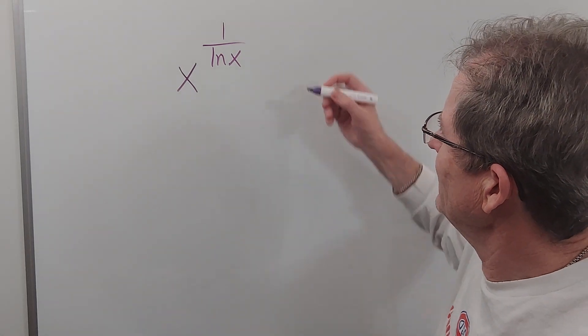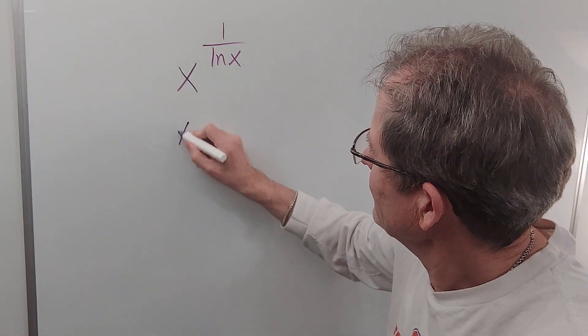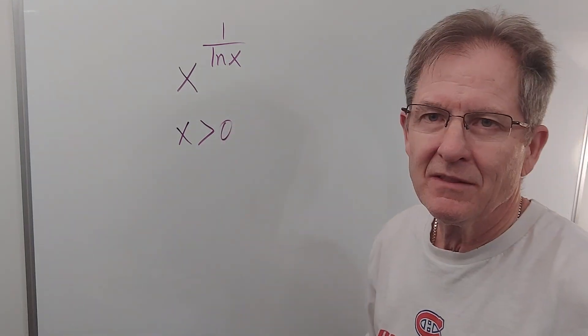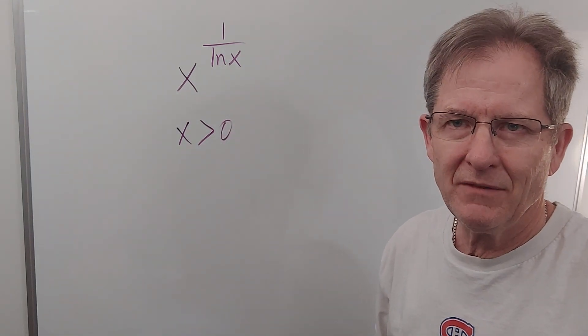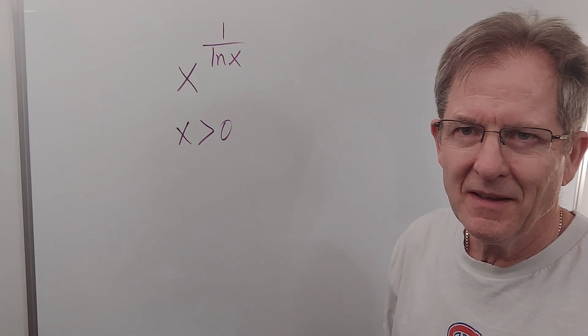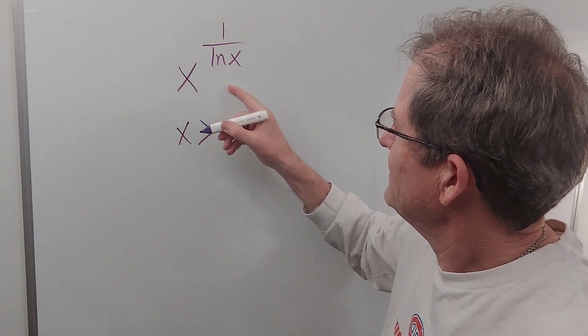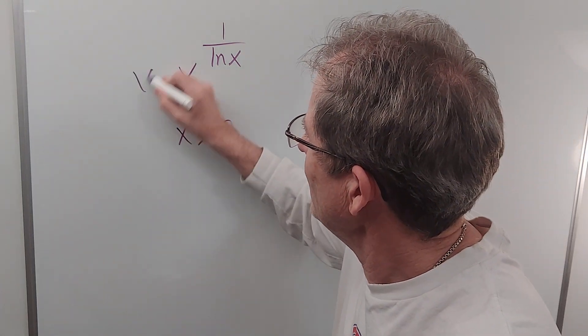Now in this expression, of course, we know that x must be greater than 0, because you can't have the ln of a negative number or the ln of 0. But besides that, to figure out what this simplifies to, let's just call this y.